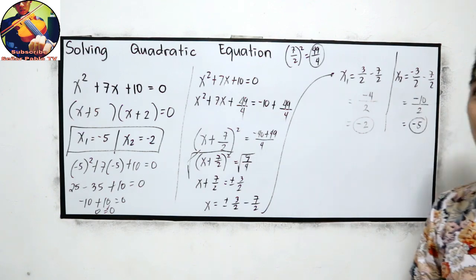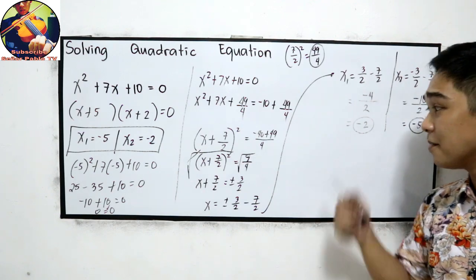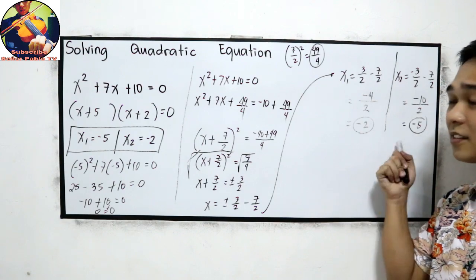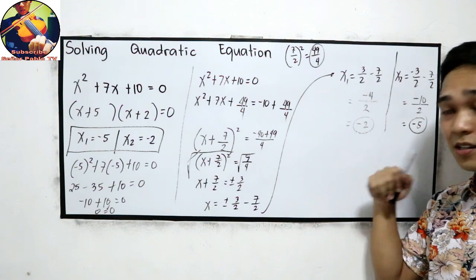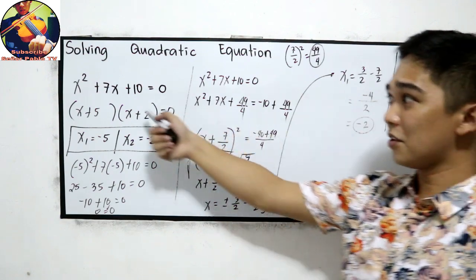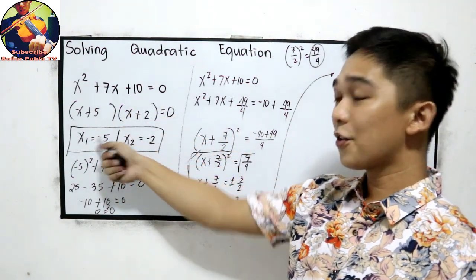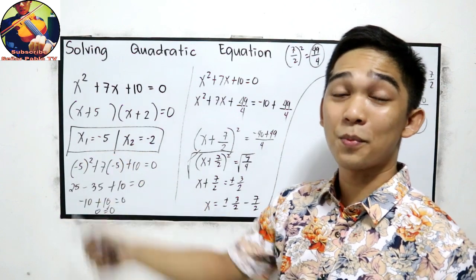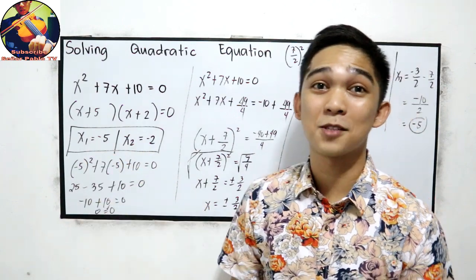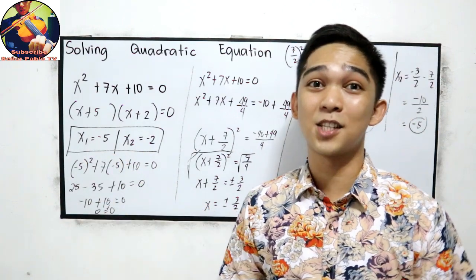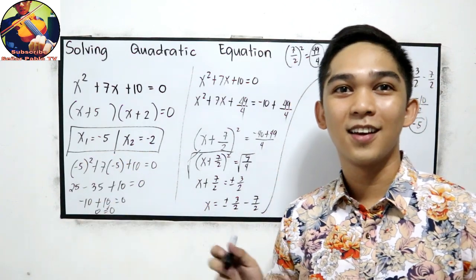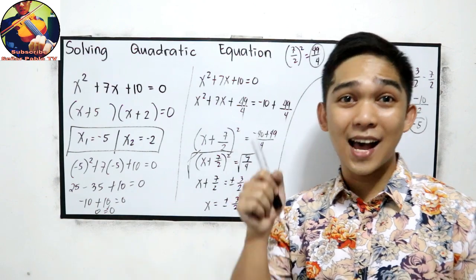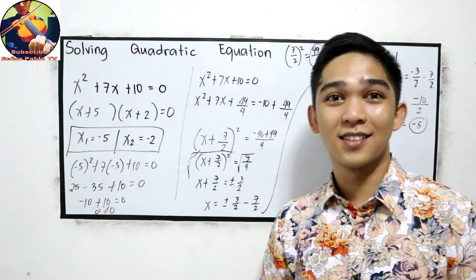These are the same answers as when we used factoring in the form x squared plus bx plus c equals 0.